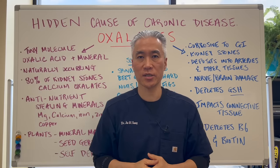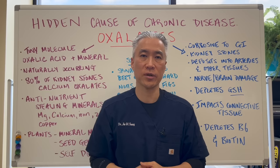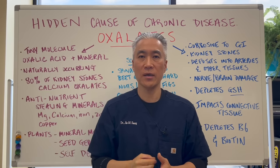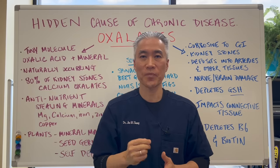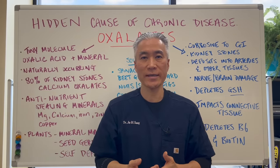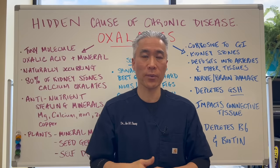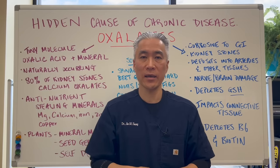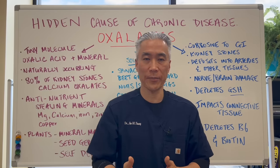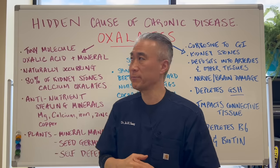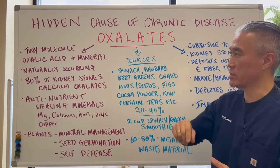Welcome back, this is Dr. Jin Sung, where clinical excellence meets excellent results. The hidden cause of chronic disease: oxalates. What is it? How do we get it? How do we remove it from our body? And how do we prevent what we call oxalate dumping? So let's get right into it. Hidden cause of chronic disease: oxalates.